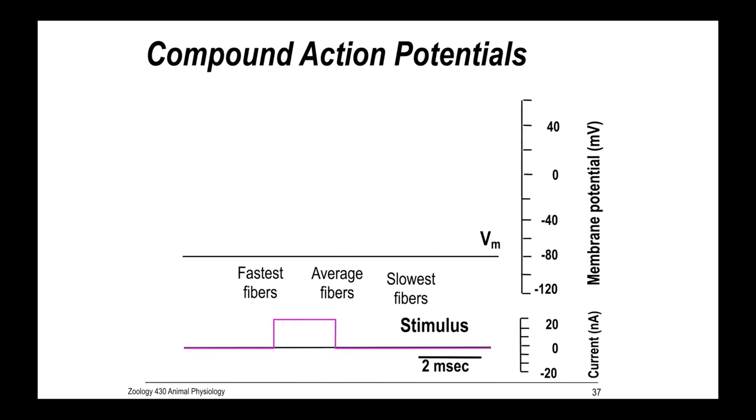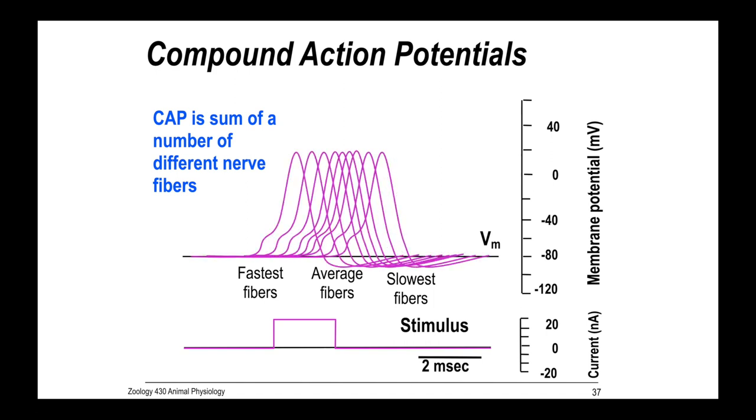You're going to give it a stimulus. Then what you're going to observe is what's called a compound action potential. It's compound because it's the sum of a number of different nerve fibers. If you were able to measure each one individually, they might look like this. But they differ a little bit in diameter. Some are going to be faster than others and some are going to be slower than others. Overall, they sum to the compound action potential. Conceptually, that's what's going on. They'll look a little bit broader and fatter than you might expect an action potential to look.